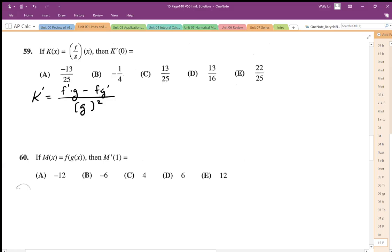There's my derivative. I need to, in notation form, evaluate the k prime value at x equals 0. That means I need f prime at 0, I need g at 0, I need f at 0, g prime at 0, and I'm going to divide it by g at 0 squared.